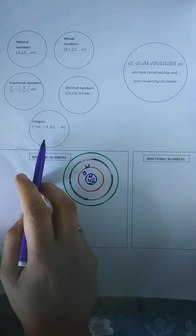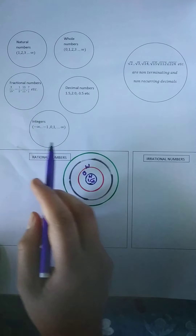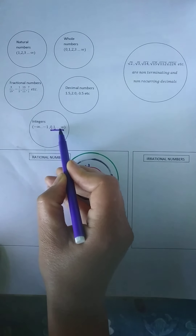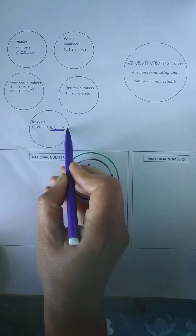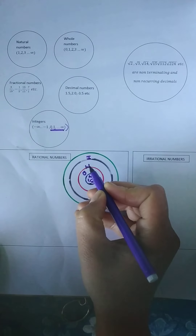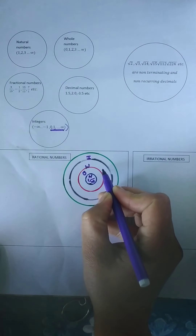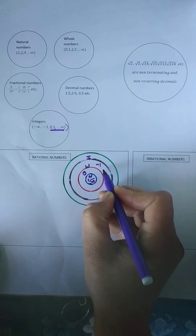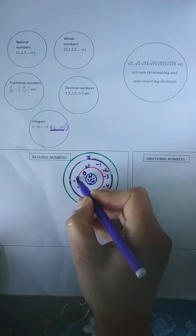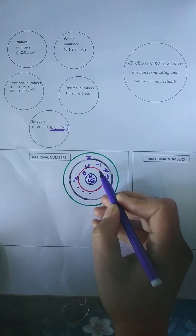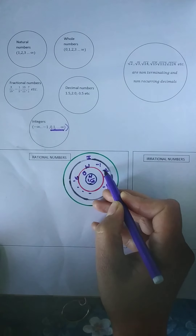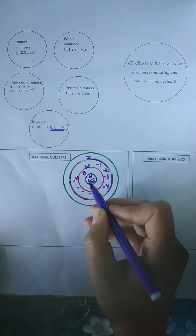Then comes integers, which you were taught in class 7. Integers also include all the whole numbers — meaning whole numbers, natural numbers — and some negative numbers also. Combined, they are called integers. That means integers is a bigger set. It includes whole numbers, and this extra space occupies minus 1, minus 2, minus 3, minus 4, and so on till negative infinity. So natural numbers sit inside whole numbers, and whole numbers sit inside integers, but the negative integers are not included in whole numbers — only in integers.